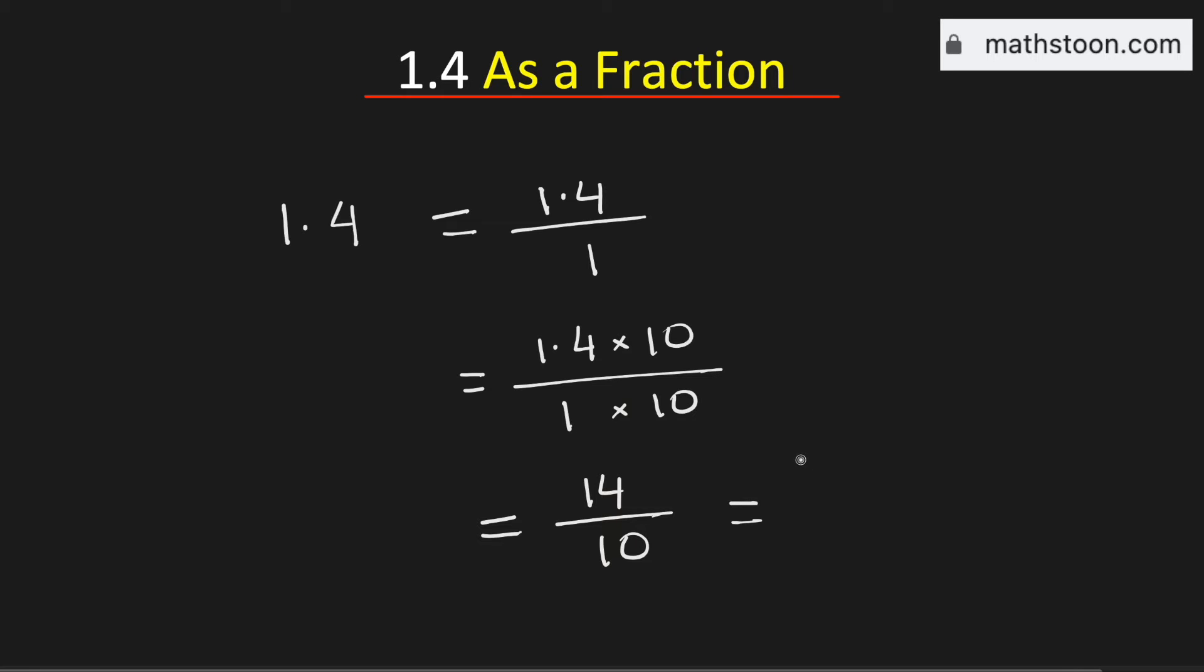By doing so, we get 7 over 5. As both 5 and 7 are prime numbers, this fraction is simplified. So 1.4 as a fraction is the same as 7 over 5. This is our final answer. Thank you for watching.